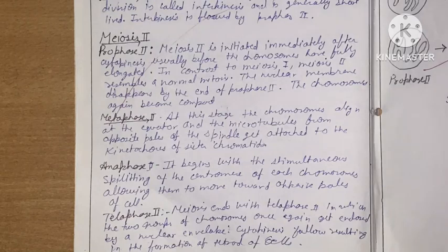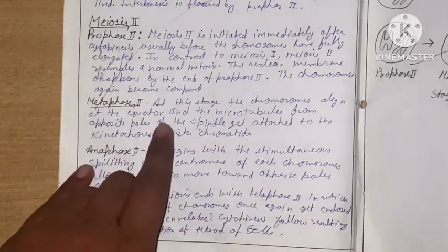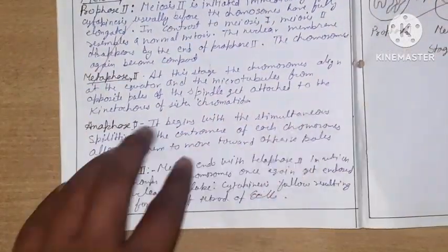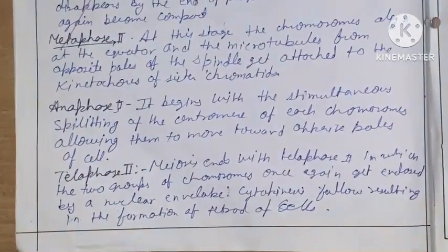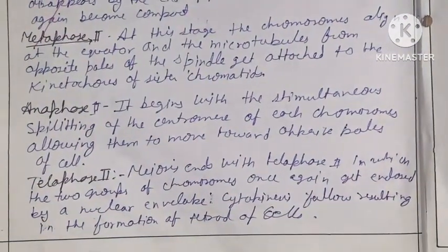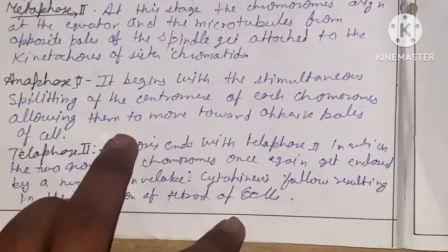In metaphase II, the chromosomes align at the equator and microtubules from opposite poles of the spindle attach to the kinetochores of sister chromatids. Anaphase II begins with the stimulation and splitting of the centromere of each chromosome, allowing them to move toward opposite poles of the cell.